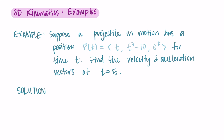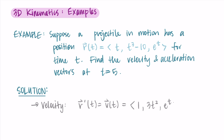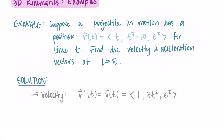I'm going to start by finding the velocity vector. The velocity is the derivative of position, so v(t) = r'(t). I take the derivative of each component: the derivative of t is 1, the derivative of t³ - 10 is 3t², and the derivative of eᵗ is just eᵗ. So that is my velocity vector.